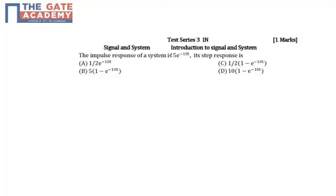Whenever we are given such a question, always remember: impulse response is the derivative of the step response. I will replace impulse by delta (δ) and step by u. So δ = du/dt, or u = ∫δ dt.